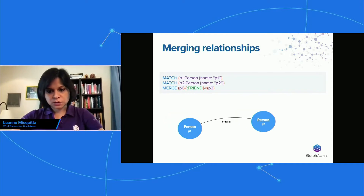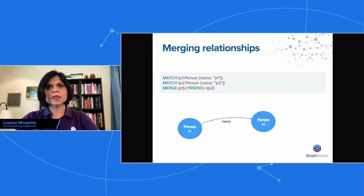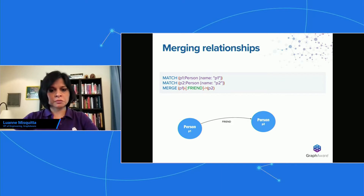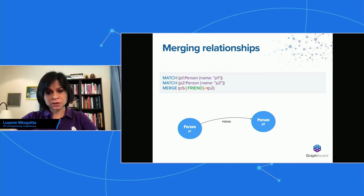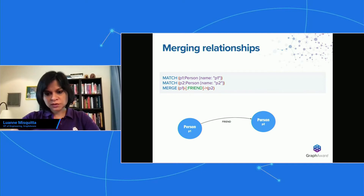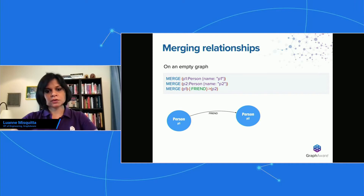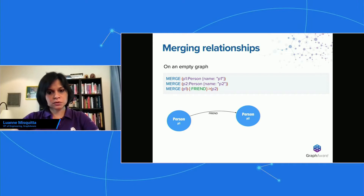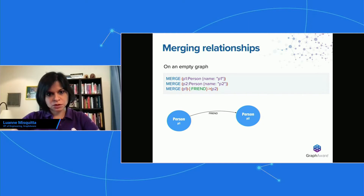The problem with the previous approach is that many times you are ingesting data from third-party systems or streaming updates to the graph, and you're not really sure how much of this data exists in your graph. It's quite possible that one of these persons isn't in your graph, in which case this query is going to do nothing — it's going to fail at the match. It cannot find the person and the query stops executing. A safer way is to merge in everything. You merge person P1, merge P2 — this ensures that if either don't exist in the graph they will be created. Then you merge the friend relationship. This is a very safe merge and the recommended way: merge your nodes, then your relationships.